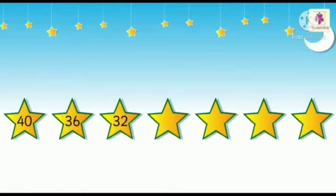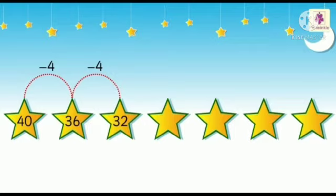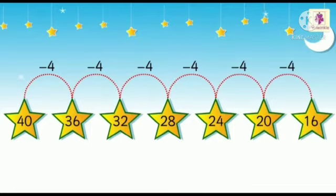See the next picture — stars are given with numbers. In the first star it is 40, second is 36, then 32. What will be next? By subtracting 4 each time: 32 minus 4 gives 28, then 28 minus 4 gives 24, then 24 minus 4 gives 20, and 20 minus 4 gives 16. This is the correct order.